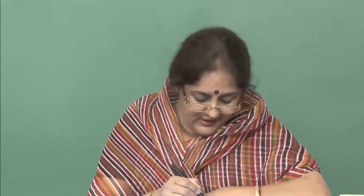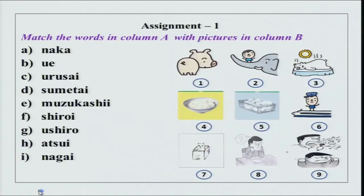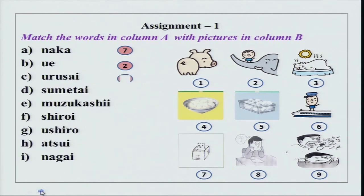Before that, as we always do, we will go over our assignments and let us see what you have done. The first assignment has some pictures and words you have to match. The first one is Naka — Neko wa hako no naka imasu. Then we have ue — Tanaka san wa zousan no hana no ue ni imasu. Sumimasen. Chotto yamete kudasai.